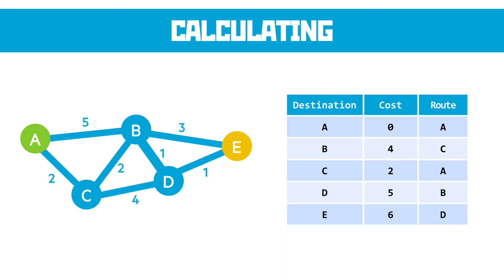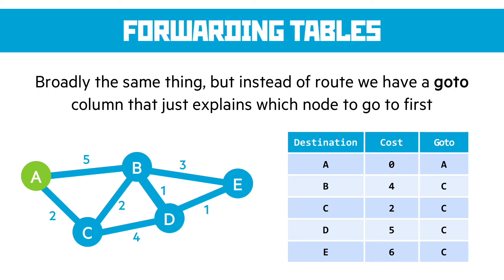That's how you fill in a routing table — it's reasonably straightforward. However, there is a slightly different format that's appeared in some past papers and particularly the example assessments at the start of this course, which is a forwarding table. A forwarding table is broadly the same thing but instead of a route, we have a 'go to' that explains which node to go to first. The costs are exactly the same, but rather than listing the previous node visited, we list the first node to visit from A. This tends to give you the shortest first node to go to.